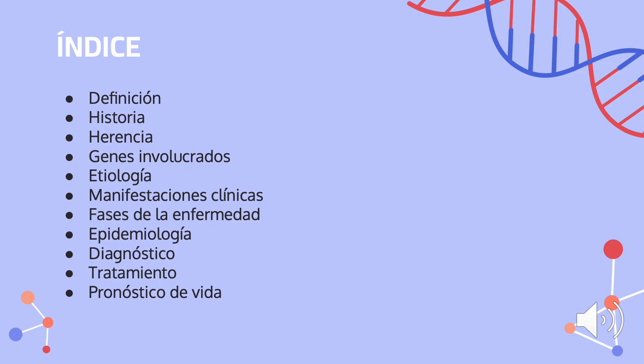Aquí están los temas que abordaremos. Primero tenemos la definición de la enfermedad, un poco de historia, la herencia, los genes involucrados, la etiología de la enfermedad, las manifestaciones clínicas, las fases de la enfermedad, la epidemiología, el diagnóstico, el tratamiento y por último el pronóstico de vida.